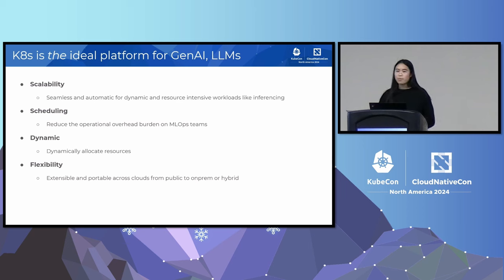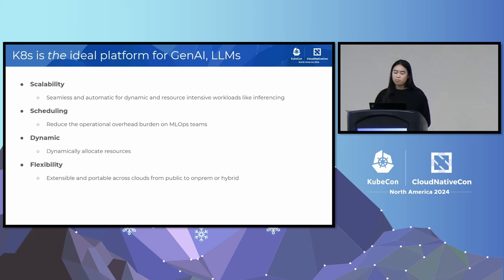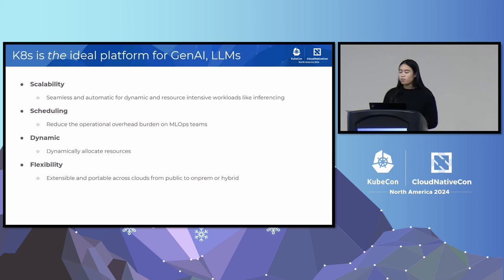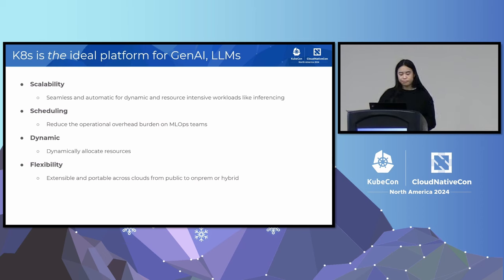Kubernetes is declarative by nature, so we communicate up front how much resources our workloads require, and Kubernetes handles all the scheduling, which really reduces the operational overhead and burden that operations teams might experience. Kubernetes is also dynamic and flexible — containerizing your AI apps means increased extensibility and portability. You can run your AI apps across clouds, on public, on-prem, even in hybrid scenarios.